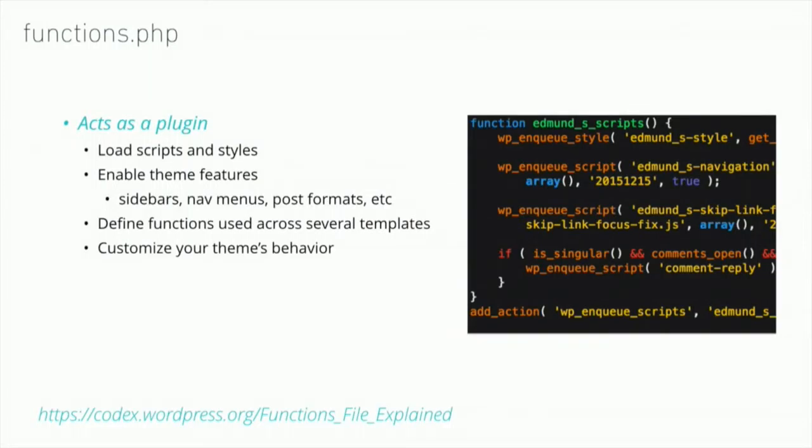The functions.php file acts like a plugin — it's loaded when WordPress initializes the theme. It's essentially where you set up all the functionality of your site: scripts, styles that are loaded, any theme features being used like menus, sidebars, and post formats. It's a central place to define functions used by many templates, and it's mainly there to customize your theme's behavior.